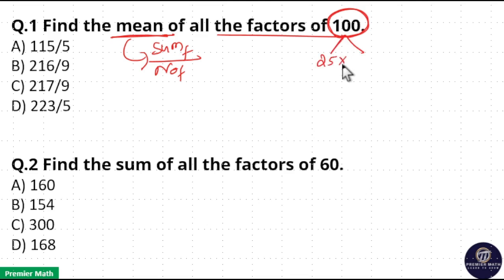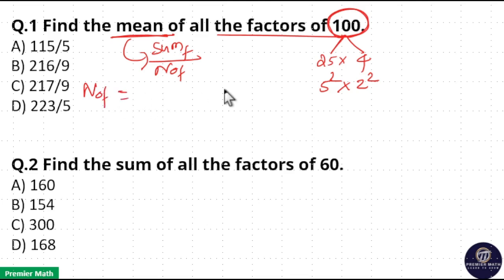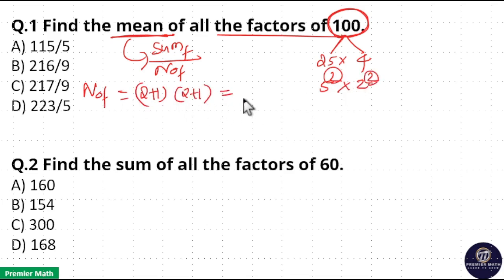25 into 4 is equal to 100. 25 is 5 square and 4 is 2 square. So total number of factors of 100 is equal to: power of 5 is 2, so take 2 plus 1, and power of 2 is 2, so again take 2 plus 1. 2 plus 1 into 2 plus 1 is equal to 3 into 3, which is 9. So total number of factors are 9.